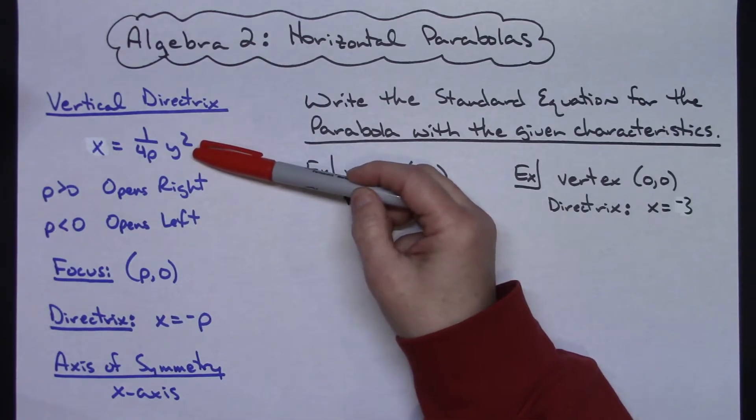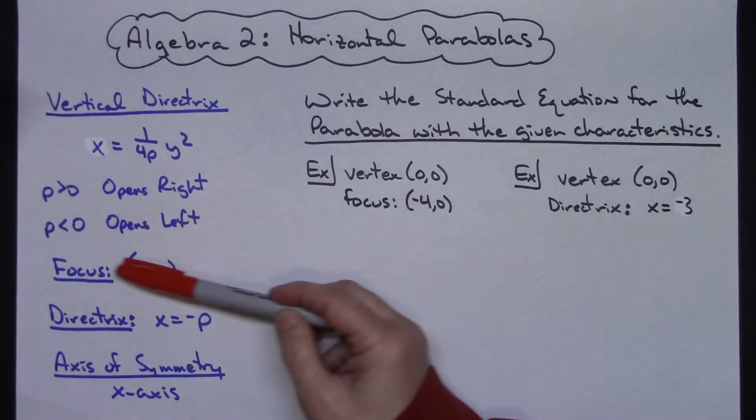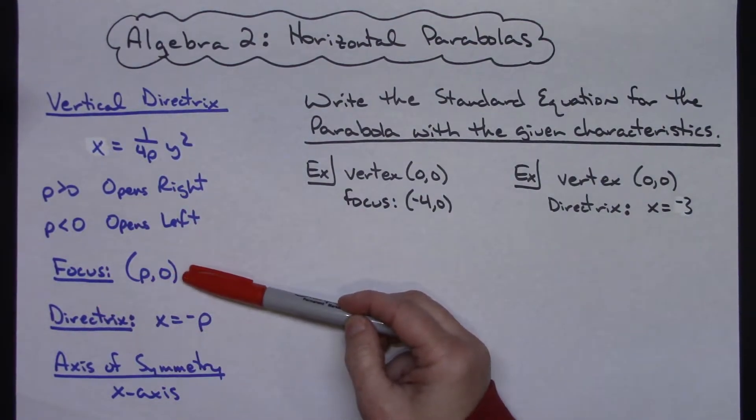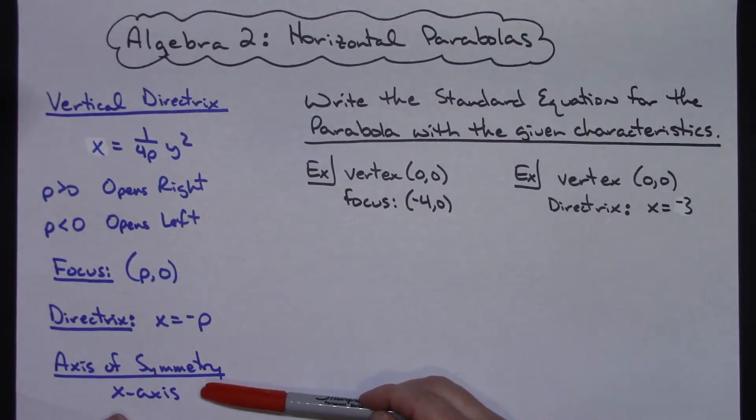Your general form of that equation. Things about p: when p is greater than zero it opens right, when p is less than zero it opens left. Where your focus is at p,0, your directrix is x equals negative p, and then the axis of symmetry is the x-axis.